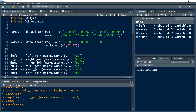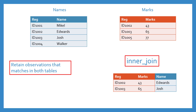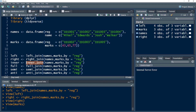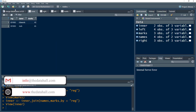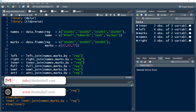Let's move to our third type, which is inner join. What inner join does is it retains the observations that match in both tables. Looking at the marks and the names table, we just have two observations that would match: 1002 and 1003. All the rest of the observations would be dropped, and the resultant data frame contains only two observations. Let's apply this in R — we use the inner_join function with the same parameters and save it in the inner data frame. We get just the two matching observations.